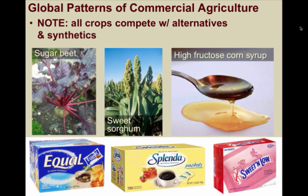All crops compete with alternatives and synthetics. For example, sugarcane has competition with sugar beets, sweet sorghum, and high fructose corn syrup. And if that's not enough, you can go with any of the artificial sweetener alternatives — which personally, to me, taste carcinogenic. Taking a packet of one of these, to me, tastes like pure cancer.